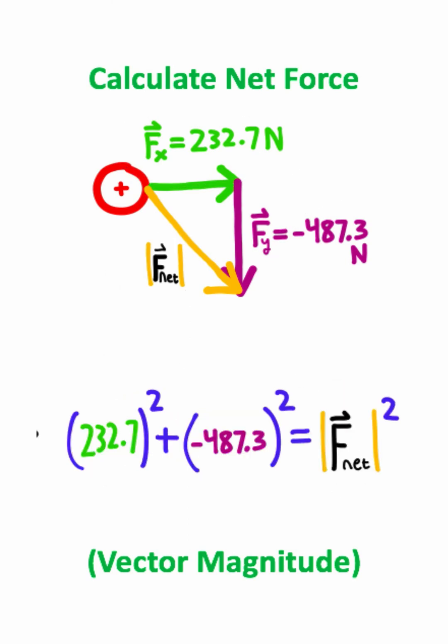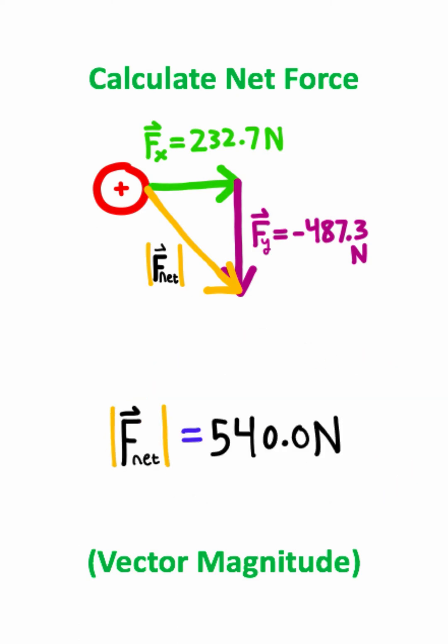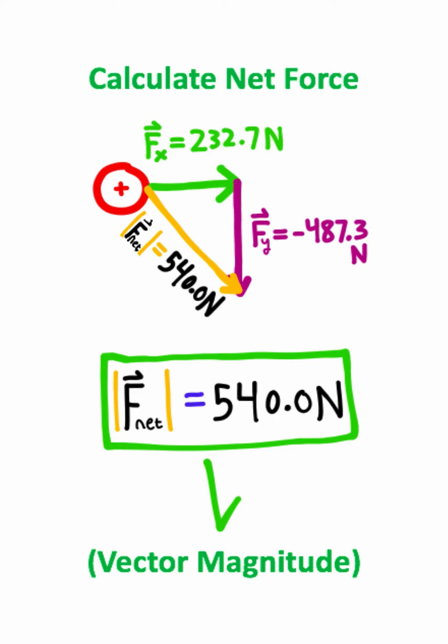To solve for net force, I just need to square root both sides of this equation. If I plug this entire quantity into a calculator, I should end up with approximately 540 Newtons. And that is the resultant magnitude of the net force.